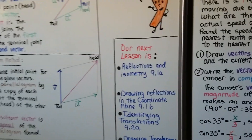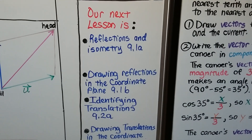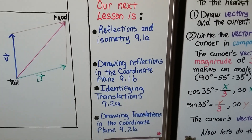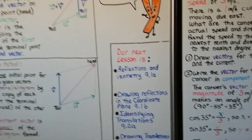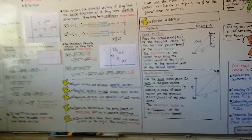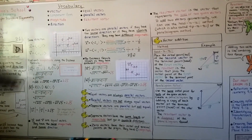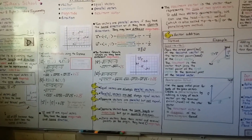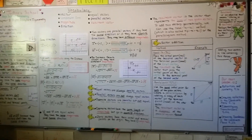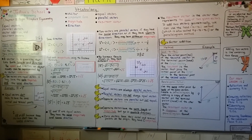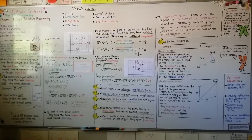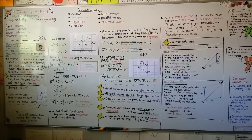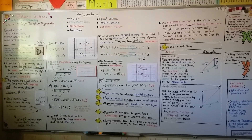Our next lesson is reflections and isometry, 9.1a, then drawing reflections in the coordinate plane for 9.1b. We'll get into more transformations with translations, dilations, and rotations — all in chapter 9. We're finished with chapter 8. When you see vectors, think of them as a force like acceleration — a wind blowing in a certain direction at a certain speed, or a rocket going in a certain direction. That's a vector. Have a great day!